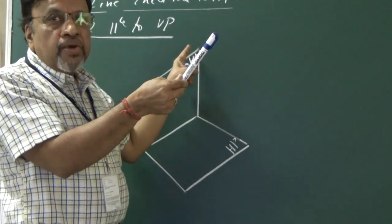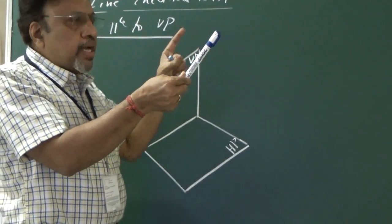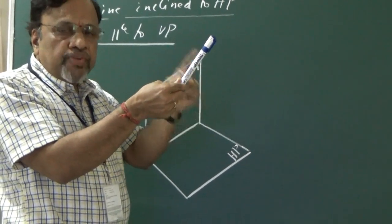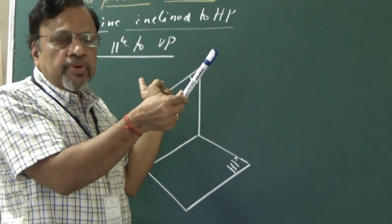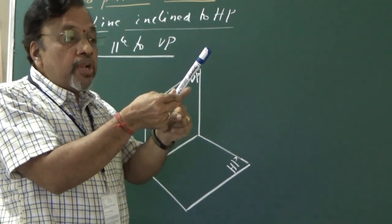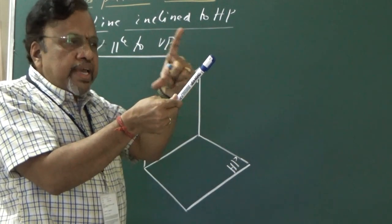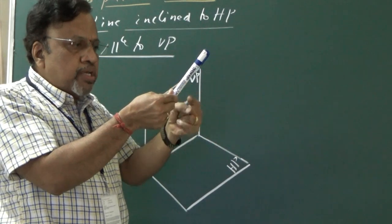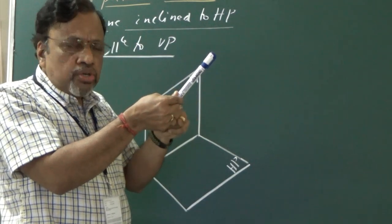Since the line is parallel to VP, the true length will be seen in the front view. Not only that, this line is now inclined to HP. The inclination of this line with HP will also be seen in the front view. In the front view, we can draw the projection as a line of true length, and that true length is inclined to HP by an angle, let us say theta. Generally, we consider theta to be the angle with reference to HP.